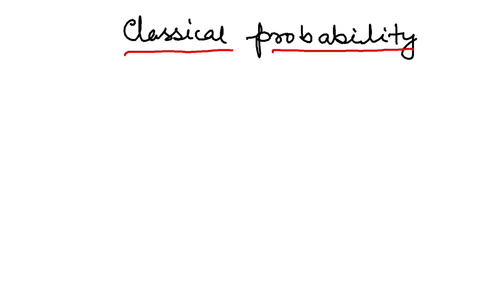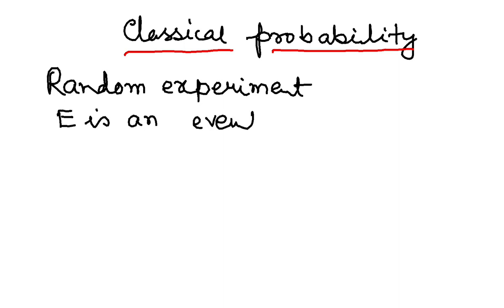So if we have a random experiment and let's say E is an event from that experiment. We all know what is a random experiment and we all know what is an event, right.